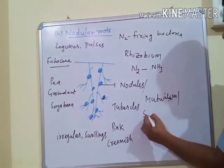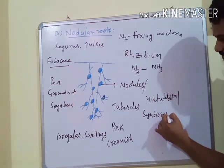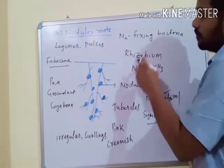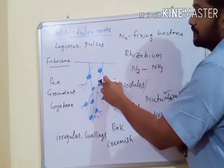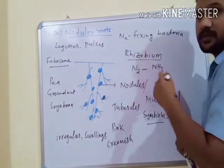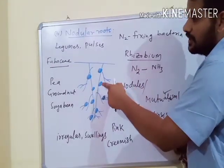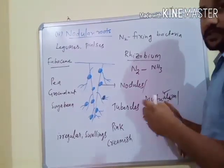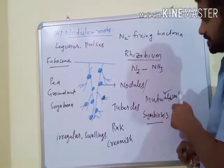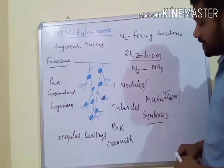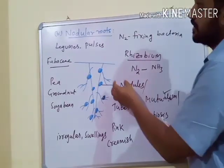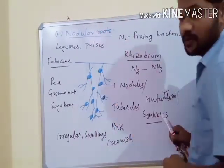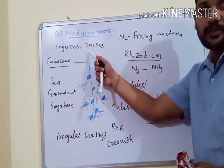Mutualism is also called Symbiosis. In this interaction, both organisms benefit: the Rhizobium gets shelter and food from the roots of Legumes, and the roots of Legumes get useful forms of Nitrogen from the bacteria. Rhizobium is able to convert atmospheric dinitrogen into ammonia and other useful forms. Such interaction is called Mutualism or Reciprocal Symbiosis. Roots that have nodules present on them are called Nodular Roots.